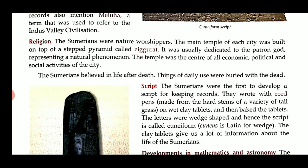This script was deciphered by Henry Rawlinson, a British officer. The Sumerians were the first to develop a script for keeping records; they wrote with reed. Reed means a pen which was made of bone.